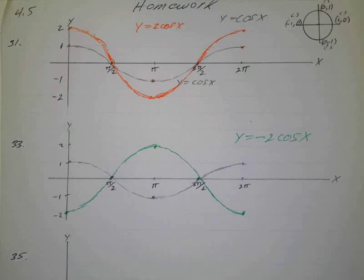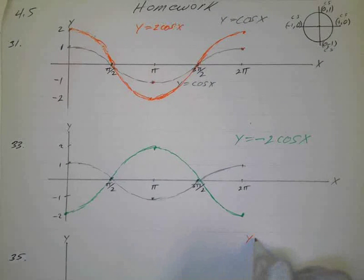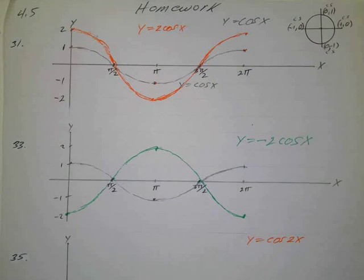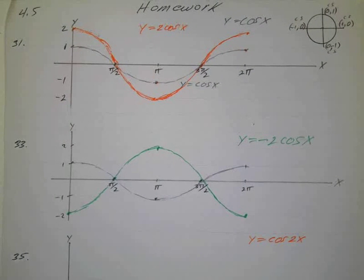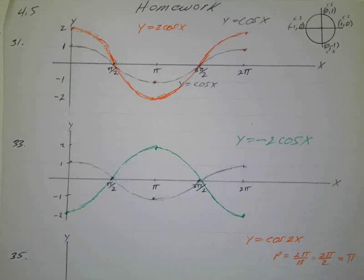That's 4.5, number 31 and 33. And number 35, we've got a period shift. So let's see if we can get this in here. They tell you we want Y equals the cosine of 2X. The amplitude would be 1, it's just that the period is going to be. Well there's a B there. So remember period equals 2 pi over B, which is 2 pi over, and B is 2, so that's just pi.